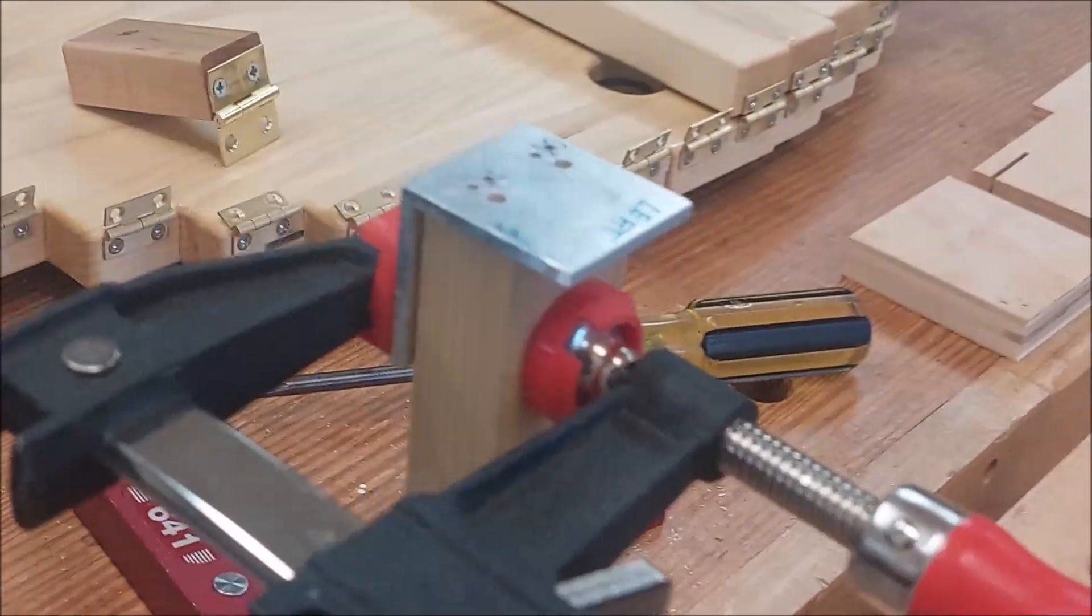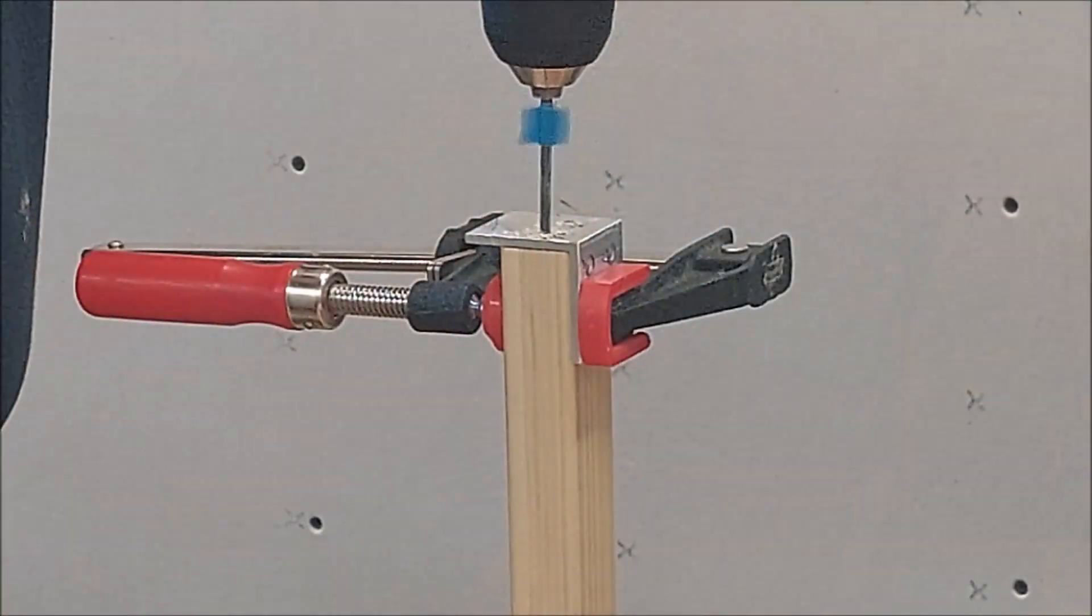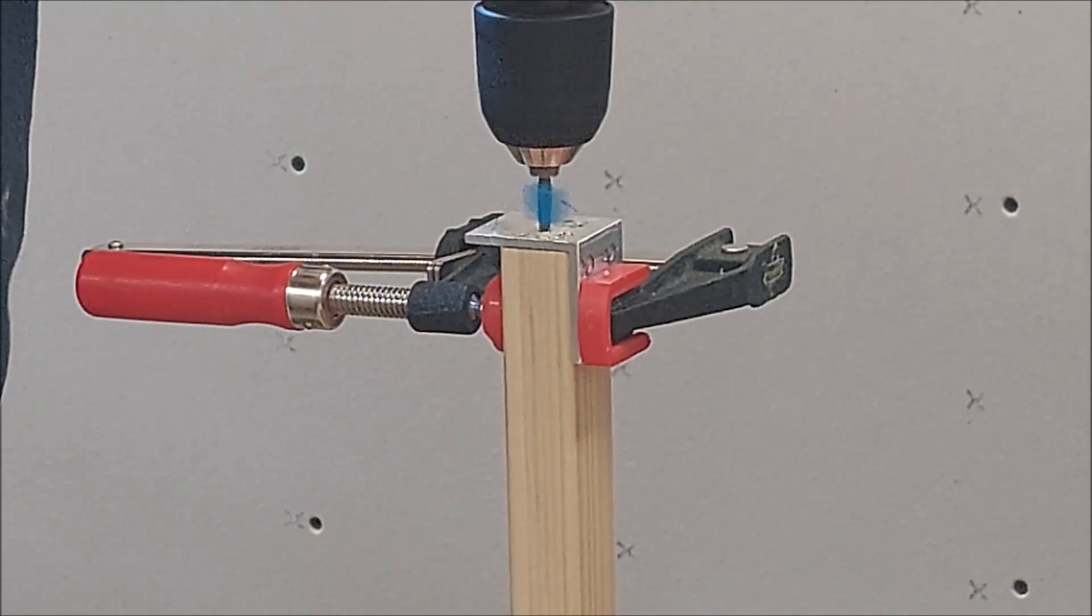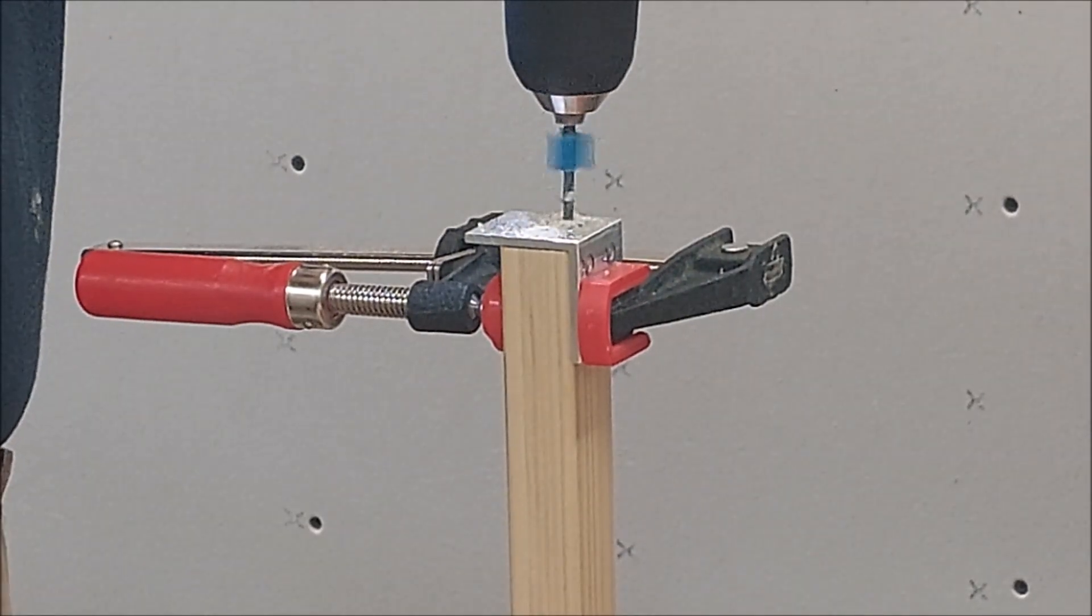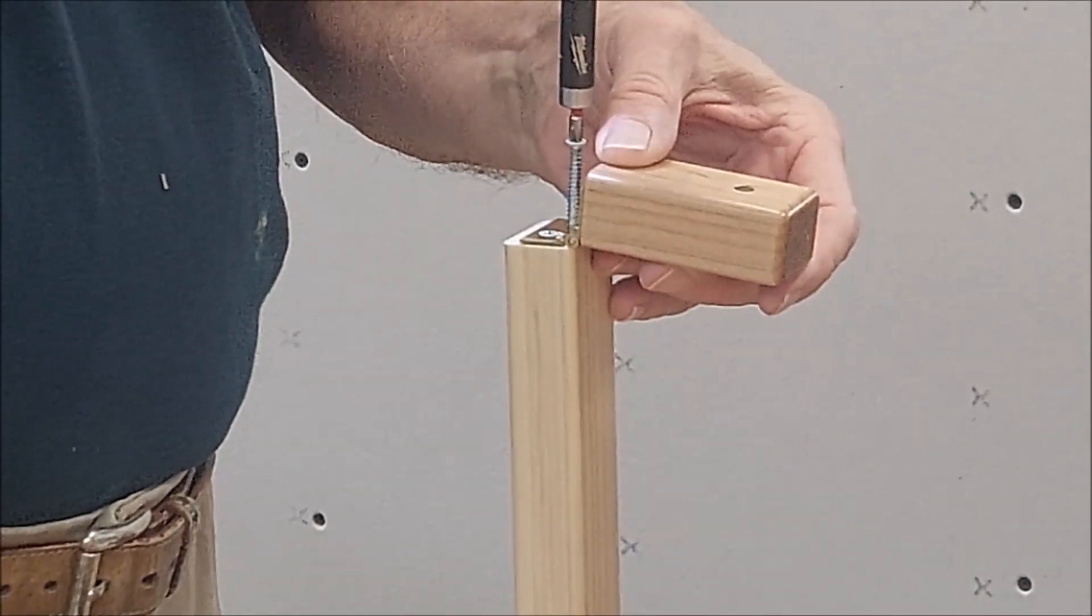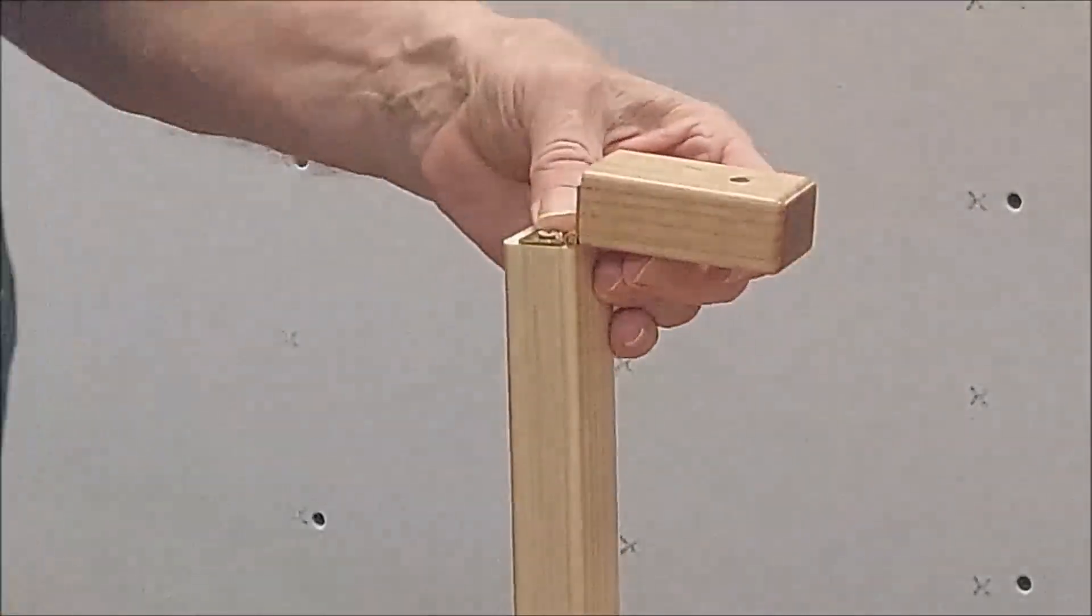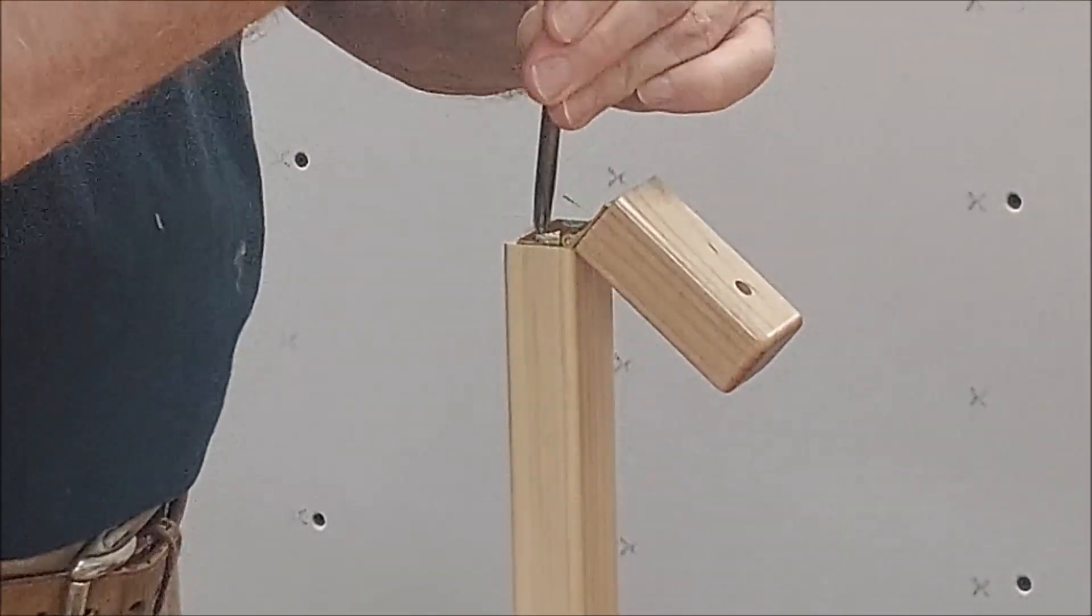The aluminum angle jig was also used to precisely locate hinge screws at the ends of the slats. Slats number one and number thirty receive special hinges at the top to hold blocks that were used to connect the project to the wall.